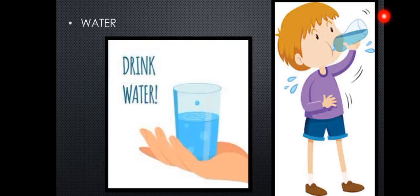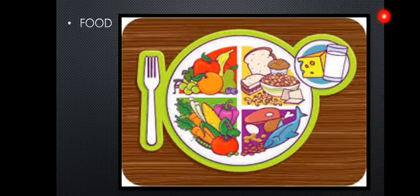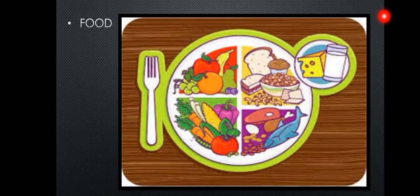The next factor is water. Water is the basic necessity of our life. Without water it is not possible for life to survive. The next factor is food. All living things need food to live and grow. Animals and plants both need food to live. Animals do not make their own food — they get food from different types of animals and also from plants. Plants are living things which make their own food with the help of air, water and sunlight.